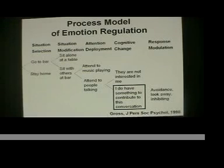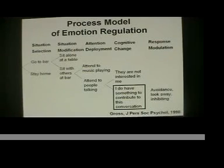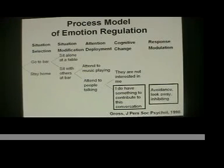The final component here is response modulation. Having generated an emotion of either fear, worry, or anxiety, one way to respond is to either avoid, look away, or inhibit interacting interpersonally with other people. This we refer to as suppressing the expression of emotion — not showing what you're feeling. So I'm going to be focusing in this talk on these two specific types of emotion regulation.